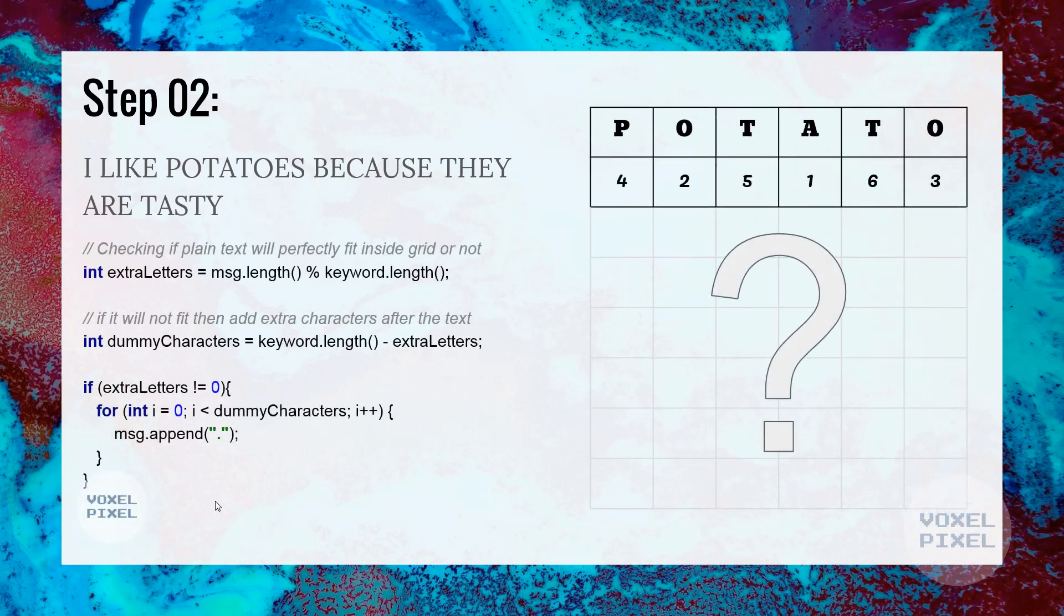Next, we will check if our plain text fits perfectly into a grid. We will calculate grid size in the next step. But here, to check if our plain text will fit into the grid, we will take modulus between length of the message and keyword length. If our modulus returns 0, then it will fit perfectly. Otherwise, we will append extra dummy characters at the end of the message.